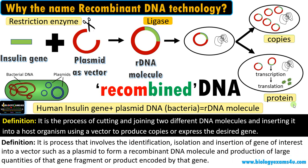A more precise definition: it is a process that involves identification, isolation, and insertion of a gene of interest — here an insulin gene — that is transferred into a suitable vector such as a plasmid to form a recombinant DNA molecule, and the production of a large number of copies of that particular gene or the product encoded by that gene.